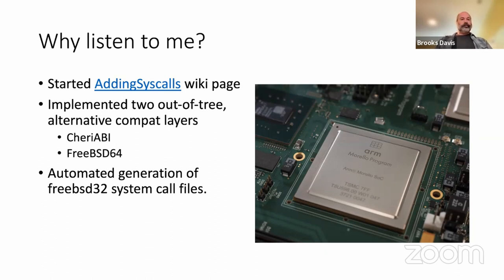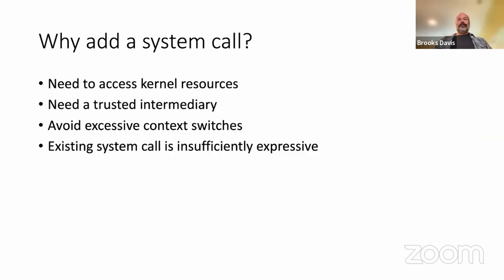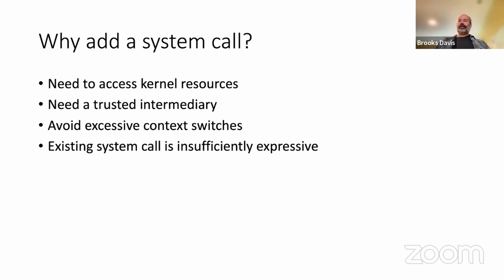So let's talk about why you'd want to add a system call. Maybe you need access to kernel resources, maybe you need a trusted intermediary between processes, or you want to do something like sendfile, which avoids excessive context switches when using an existing API. With sendfile you can say 'send this gigabyte of data from this file to this socket on the internet,' which avoids having to go in and out of the program.